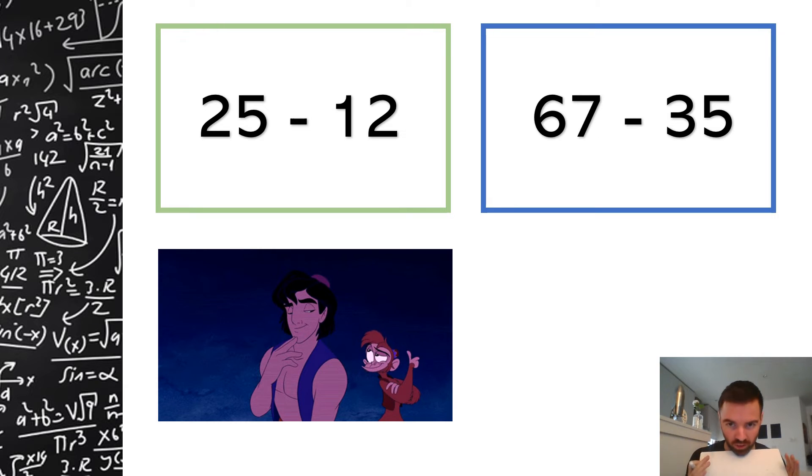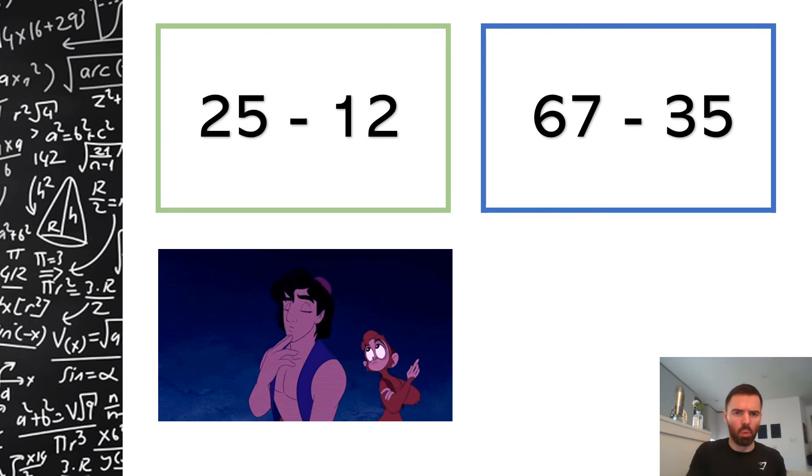25 take away 12 or 67 take away 35. Oh, Aladdin as well! Prince Ali, fabulous he, Ali Ababwa. I thought that was quite good, did that. No? Was that more maths, less singing? Okay, fine. Right, what will I pick?